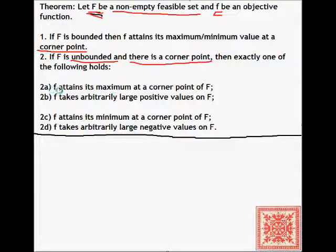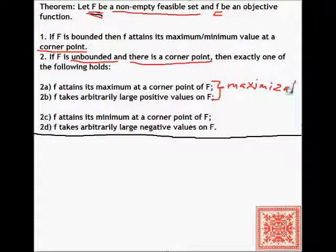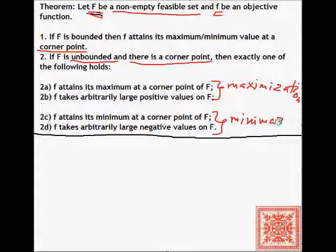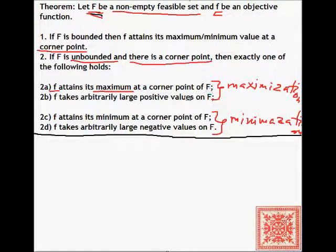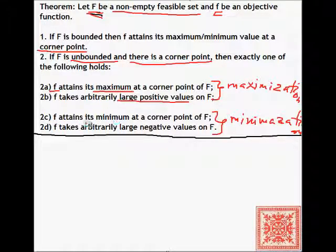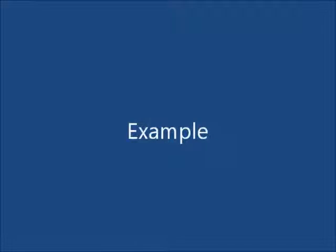If F is unbounded and has a corner point, then exactly one of the following holds depending on whether we are solving a maximization or minimization problem. For maximization: either f attains its maximum at a corner point, or f takes arbitrarily large positive values on F — one or the other, but not both. For minimization: either f attains its minimum at a corner point, or f takes arbitrarily large negative values on F.